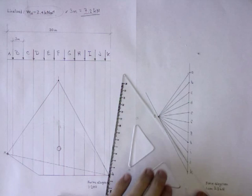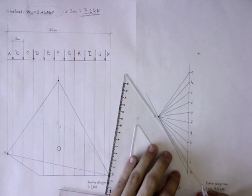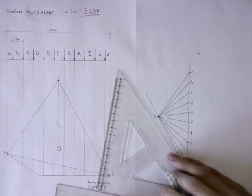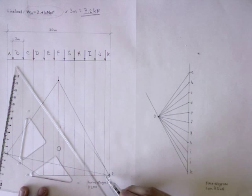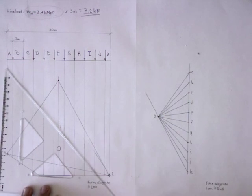The last step is to transfer all the lines you just drew into the form diagram. Notice that the first line is a tangent line.